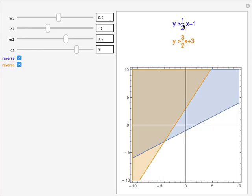So we have two inequalities here: y is greater than one-half x minus one, and y is greater than three-halves x plus three. How do we graph the solution that satisfies both these equations?